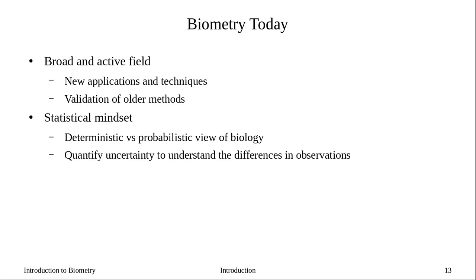That's a brief history. Where are we today in biometry and biostatistics? Even though we use textbooks that are open source and haven't changed much, the field is still very active and fairly broad. New techniques are being developed, old techniques are being applied to new problems, and there's significant effort in validating older methods. For example, analysis of variance — developed by Fisher almost 100 years ago — is still used and has been shown to be very robust to violations of assumptions.